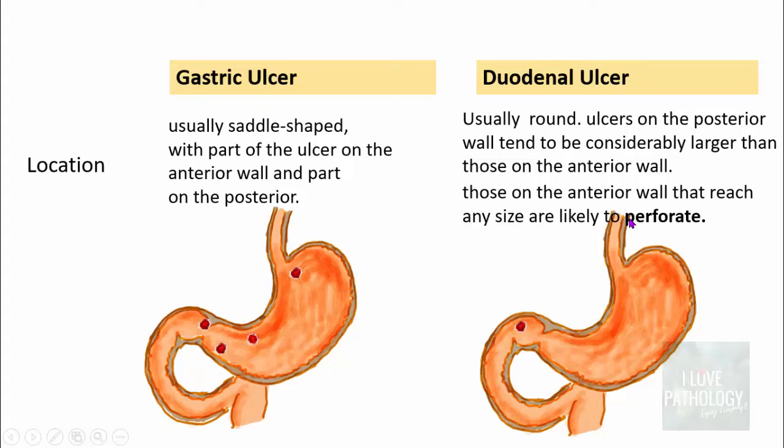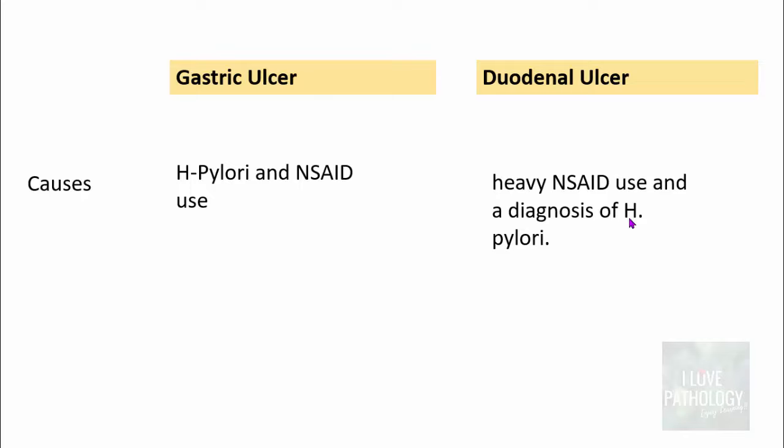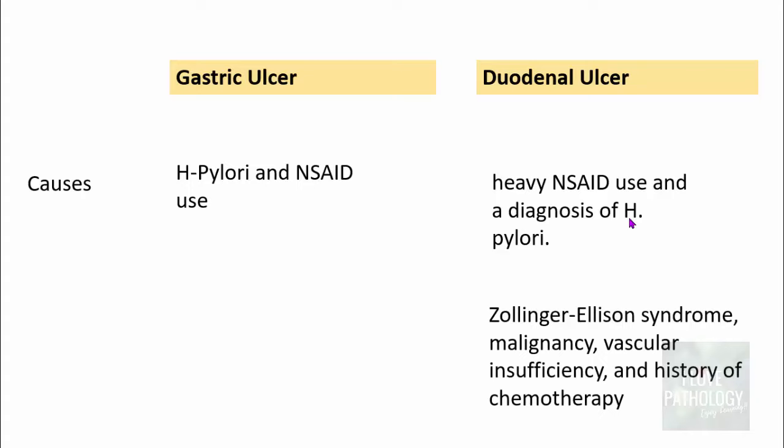Both gastric and duodenal ulcers share the same primary etiology: H. pylori infection and non-steroidal anti-inflammatory drug usage. Additional risk factors specific to duodenal ulcer development include Zollinger-Ellison syndrome, various malignancies, vascular insufficiency, and even a history of chemotherapy.